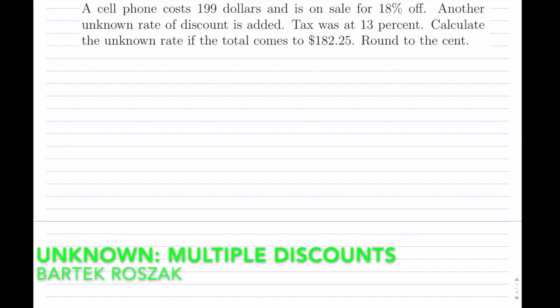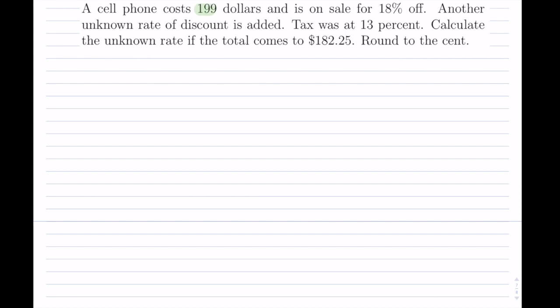A cell phone costs $199 and is on sale for 18% off. We have $199 and there's a discount of 18%.